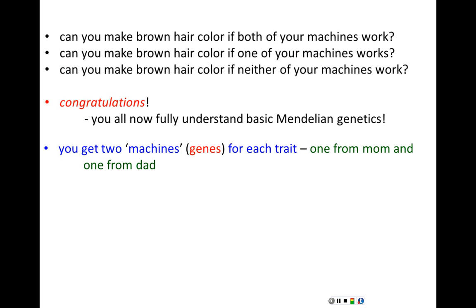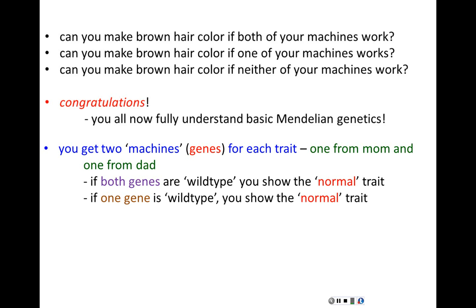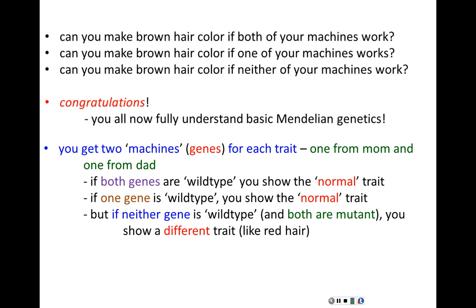You get two machines for each trait — tying directly into the analogy. We sometimes call those genes; more appropriately, we should call those alleles. You get one allele from your mother and one from your father. We each have two versions — two machines, two alleles — for every gene in our genome. If both of your alleles are wild type and carry no mutations, you have two working machines and show the normal trait. If one allele is wild type and the other is mutated, you still can make brown hair and still show the normal trait. But to get the different trait like red hair, neither allele can be working — both alleles must be mutant. Then and only then do you show that other trait.